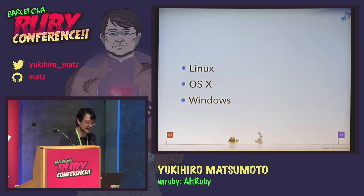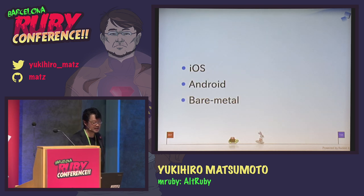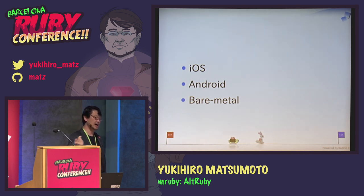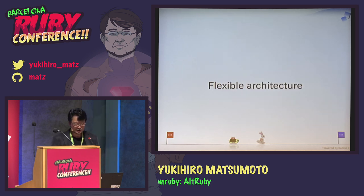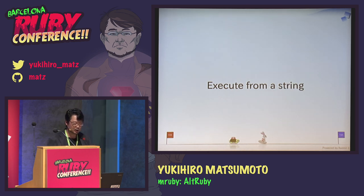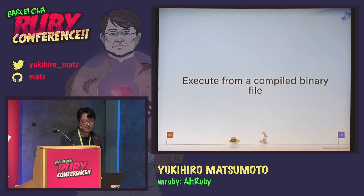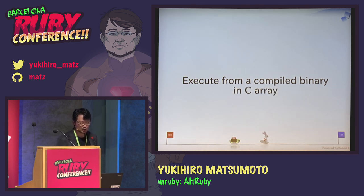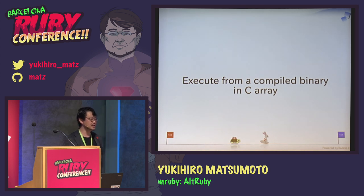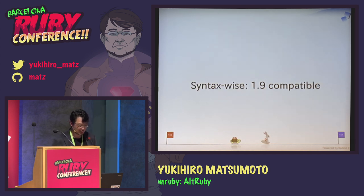MRuby only requires C99, so everywhere you can run C99 you can run MRuby. It runs on Linux, OS X, Windows, iOS, Android, or even on bare metal like Arduino. It has a very flexible architecture — you can execute programs from a file, from a string, from a compiled binary file, or load compiled binary from embedded C strings.